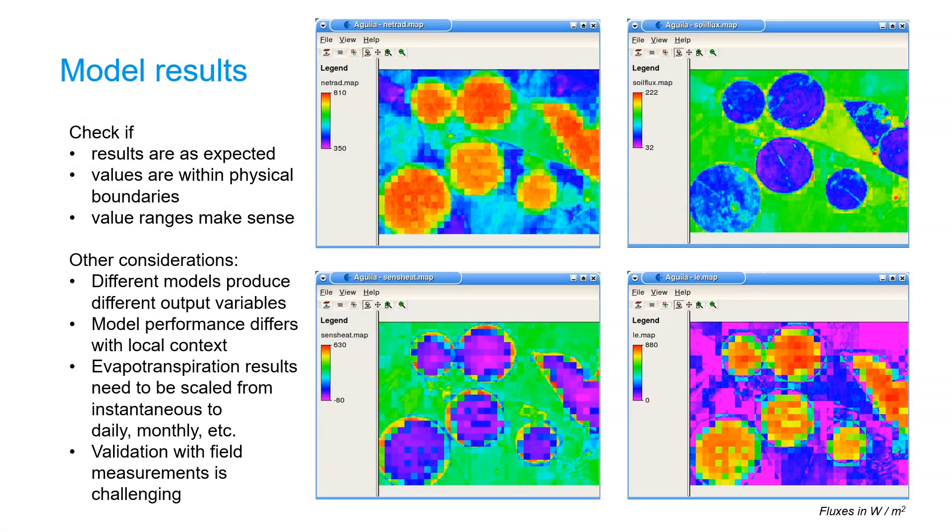There are some other considerations while using these models. Different models produce different output variables, so always check which ones you need. And in scripts you can also turn on and off the ones that need to be an output. The performance of these models differs with the local context. There's not one model that performs well under all climatic zones and with all crops, so you need to check what works best in your case. Also these models from remote sensing produce instantaneous results for evapotranspiration that needs to be scaled to daily, monthly or other timescales. This can be done in different ways. Often the evaporative fraction is assumed to be constant.